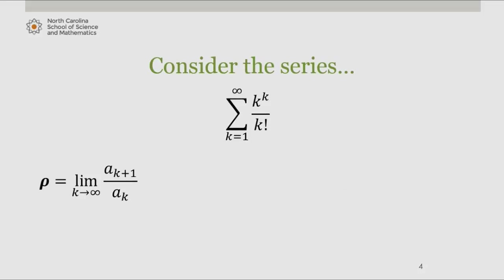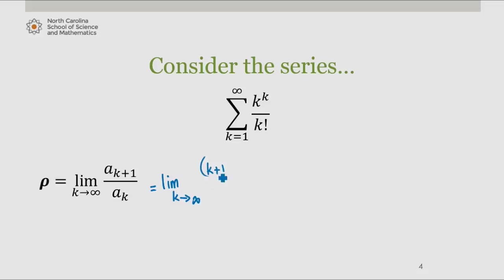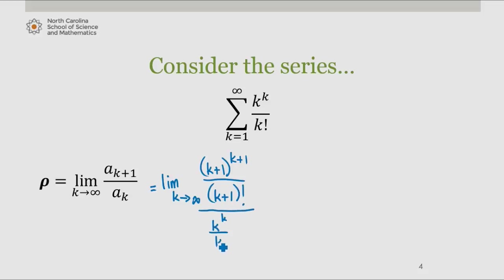Now consider the series from k equals 1 to infinity of k to the k over k factorial. Rho equals the limit as k approaches infinity of the quotient of successive terms, a sub k plus 1 over a sub k. In this case, that gives us the limit as k approaches infinity of k plus 1 to the k plus 1 divided by k plus 1 factorial, all divided by k to the k over k factorial.